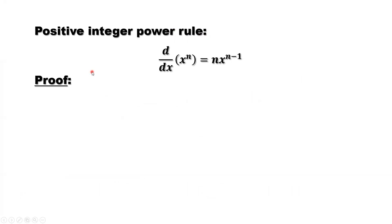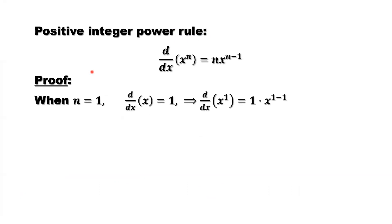What is mathematical induction? The first step: we need to prove this result is true at the starting point. We are assuming n is a positive integer, so which one is the smallest positive integer? n equals 1. So we need to check if, when n equals 1, this result is true.